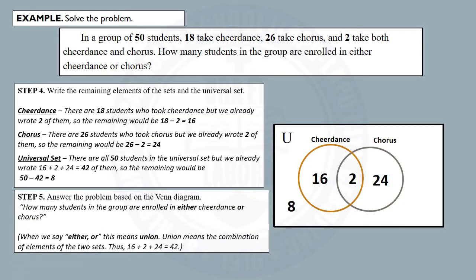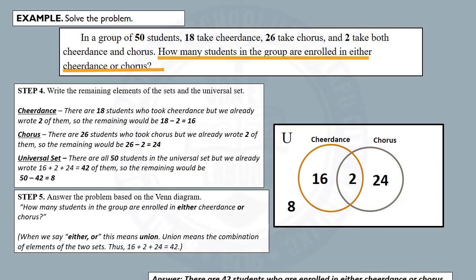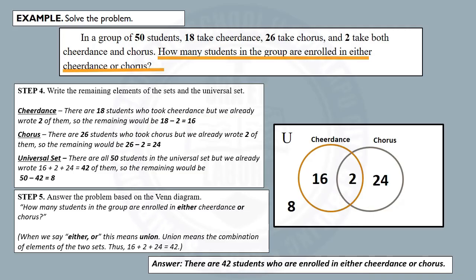Step 5: Answer the problem based on the Venn diagram. How many students in the group are enrolled in either cheer dance or chorus? When we say 'either or,' this means union. Union means the combination of elements of the two sets. So we will add the elements that belong to cheer dance and the elements that belong to chorus: 16 plus 2 plus 24, which equals 42. Therefore, there are 42 students who are enrolled in either cheer dance or chorus.